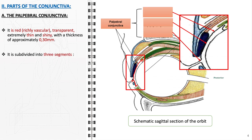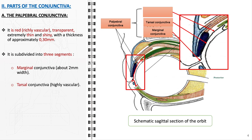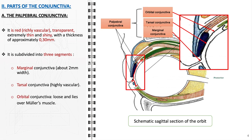Anatomically, this portion of the conjunctiva is divided into three distinct segments. The marginal conjunctiva is narrow, about 2 millimeters wide, and borders the edge of the eyelids. The tarsal conjunctiva, noted for its pronounced vascularity which contributes to its distinctive redness, is closely adherent to the tarsal plates of the eyelids. The orbital conjunctiva, featuring more loosely arranged tissue for greater eyelid mobility, is situated over Müller's muscle, a smooth muscle that assists in elevating the eyelid.